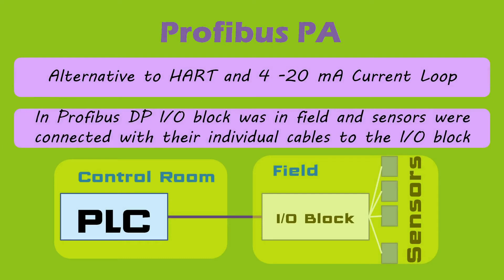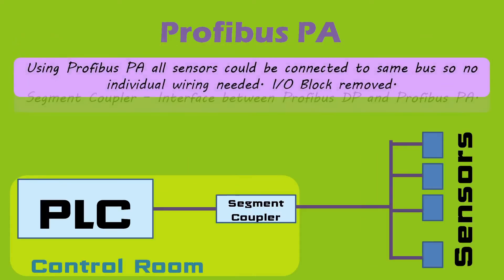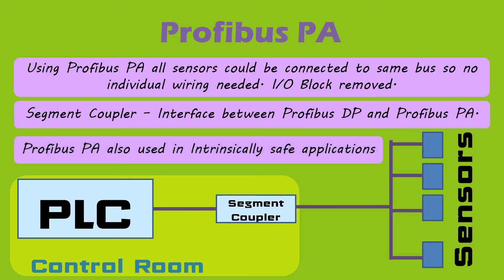Profibus PA stands for Process Automation. It was designed as an alternative to HART or 4–20 mA current loop communication. While Profibus DP carried the IO block to the field with individual sensor wiring, Profibus PA simplified this further by connecting all sensors to a single bus in the field, removing the IO block and individual wiring. An additional element called the segment coupler is introduced, which acts as an interface between Profibus DP and Profibus PA. Profibus PA is also used in intrinsically safe applications.